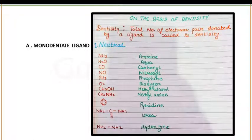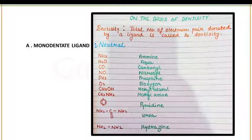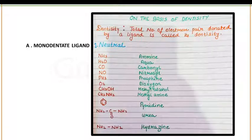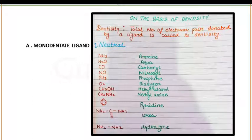First of all, you need to understand the concept of denticity. Denticity means the total number of electron pairs donated by a ligand. The first type is monodentate ligand — mono means single and dentate means electron pair donor. In monodentate ligands, only a single pair of electrons is donated by the ligand, and this single pair of electrons is accepted by the central metal atom. A monodentate ligand has only one atom that coordinates directly to the central atom in a complex.